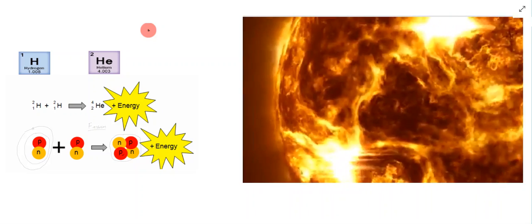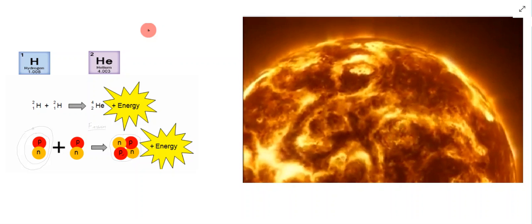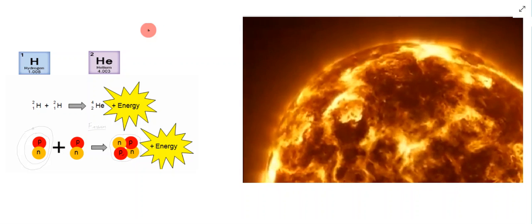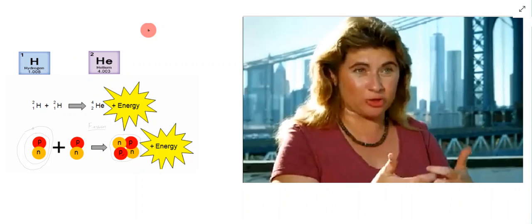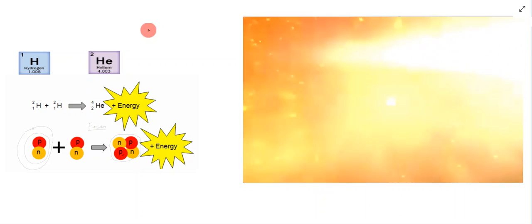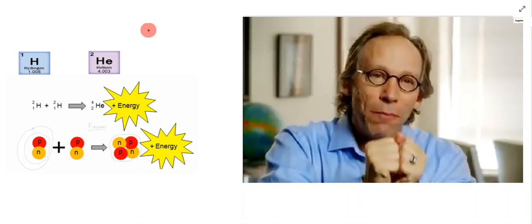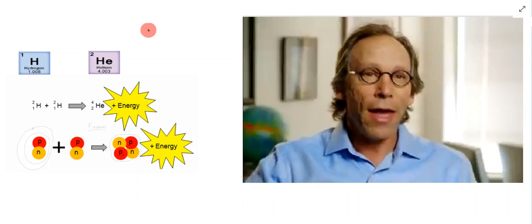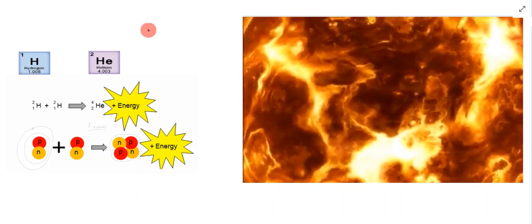To fuse, protons must come together with a huge amount of energy or velocity — which is very rare. Forcing protons together takes immense heat and pressure generated by gravity. The sun contains 99.8% of all the matter in the solar system, and all that mass creates unimaginable gravitational force, crushing things together so nuclear fusion happens. Hydrogen atoms slam together 100 million quadrillion quadrillion times each second; some collisions are so powerful that atoms fuse. When protons bind together they lose a little mass, and that mass is converted to energy — about five million tons per second.